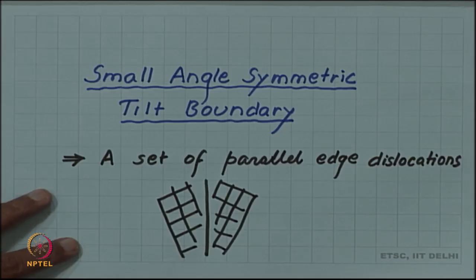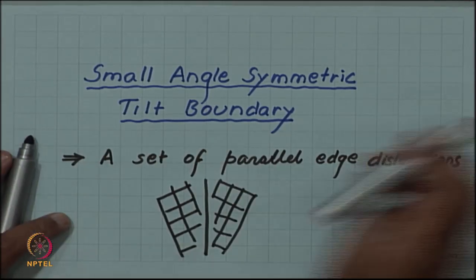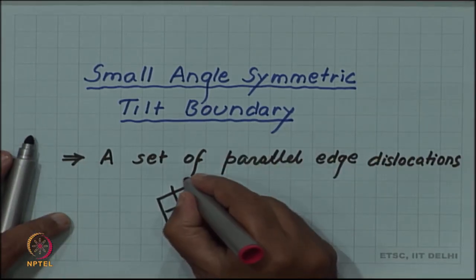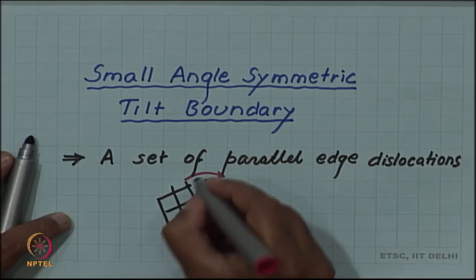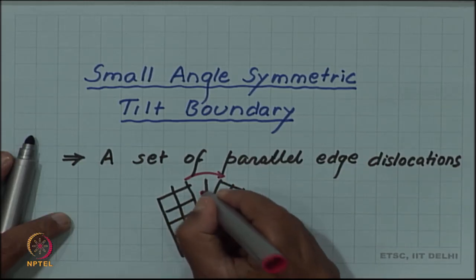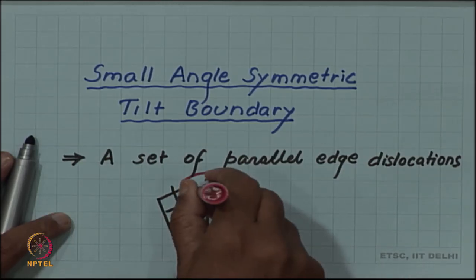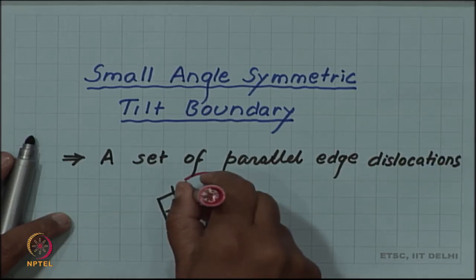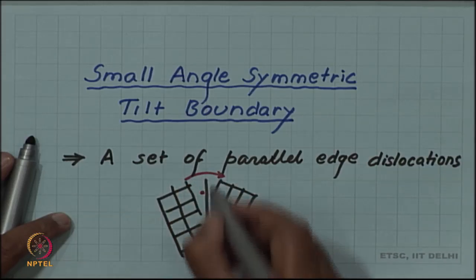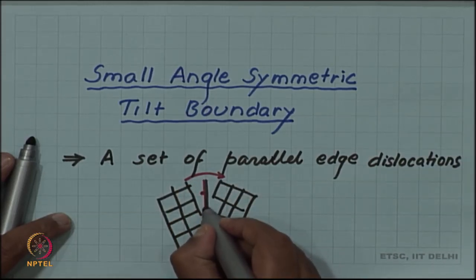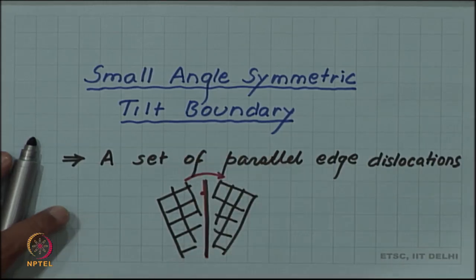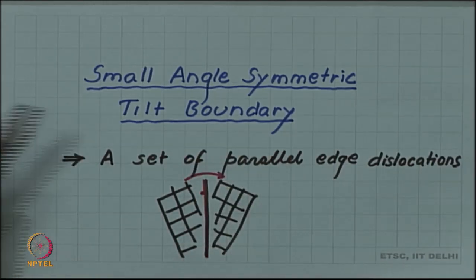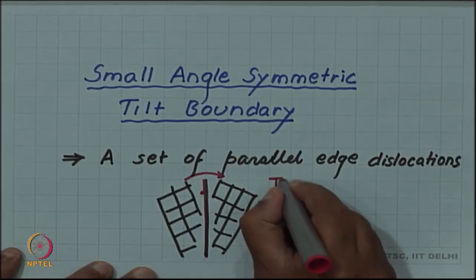So you have an orientation something like this. The rotation axis is perpendicular to the plane of the paper and the boundary axis is also lying perpendicular to the plane of the paper. The two lie parallel to each other, so this is a tilt boundary.